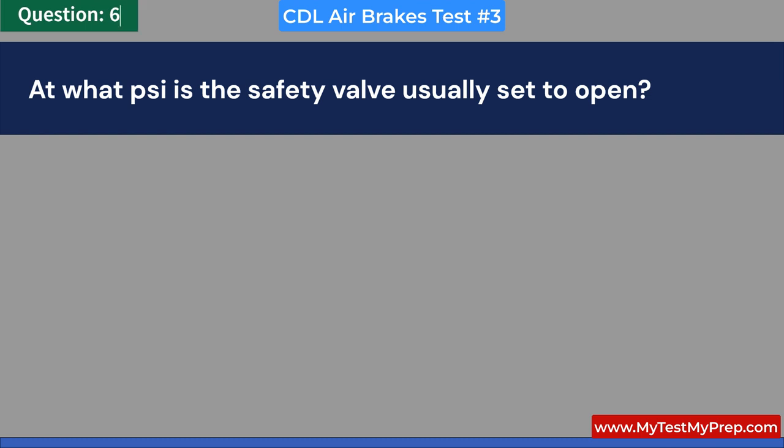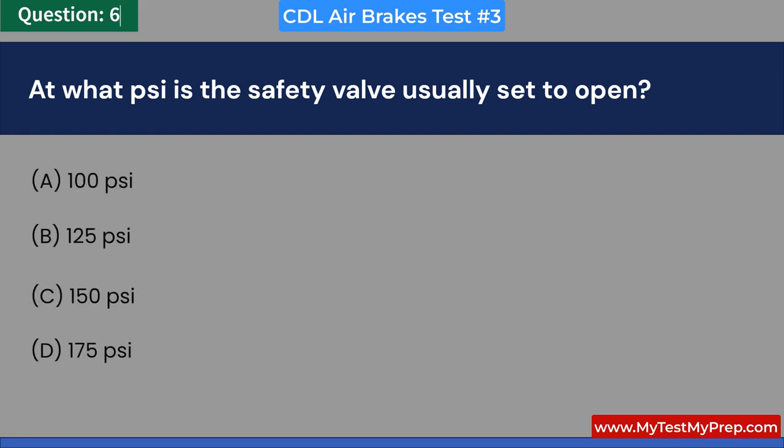At what PSI is the safety valve usually set to open? A. 100 PSI. B. 125 PSI. C. 150 PSI. D. 175 PSI. Answer: C. 150 PSI.